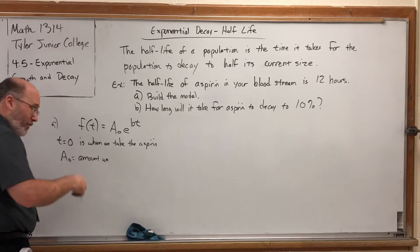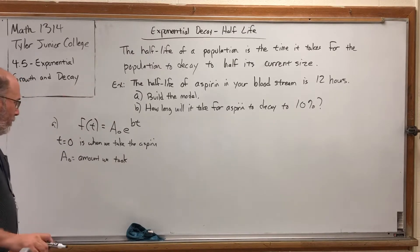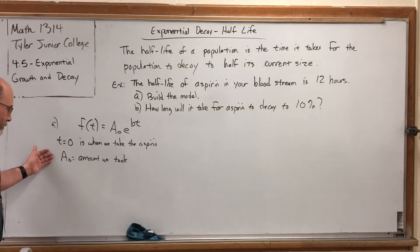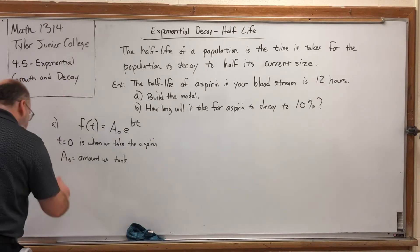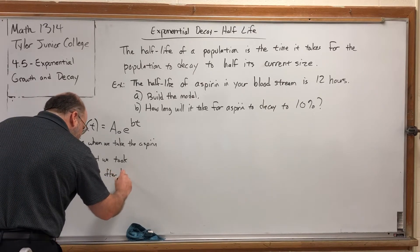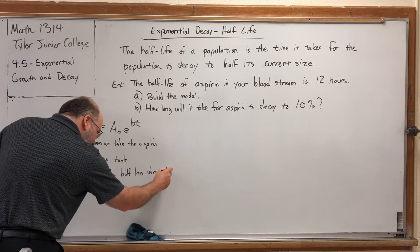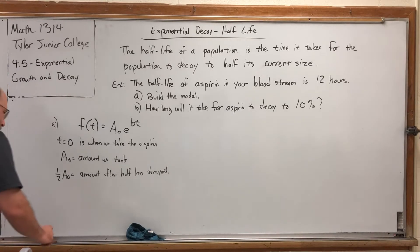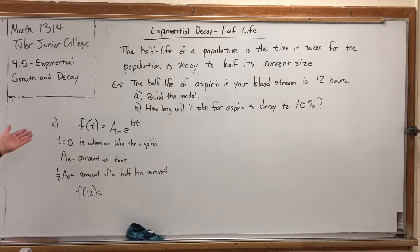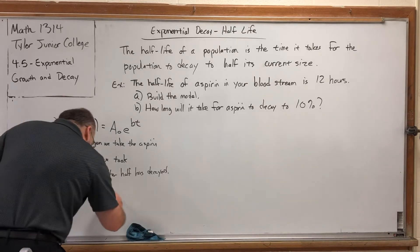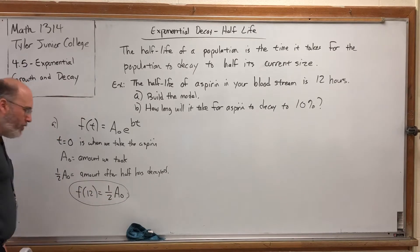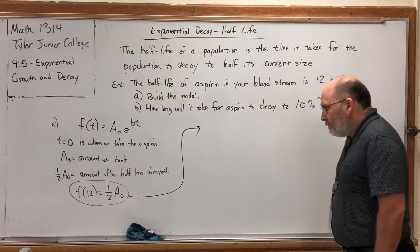What would A₀ represent? Well, that would be the amount we took. How much aspirin is in your body? Well, I literally just swallowed it. But how are we going to say that half of it has decayed when I don't even know how much of it we took? Well, it doesn't matter how much we took. It just matters that there's half of it left. One half A₀ is the amount after half has decayed, which would have been in 12 hours. So in other words, if we put 12 into our function, because that's how many hours it would take to elapse to get half of the aspirin decayed, the amount should be half of what we started with. Can we take advantage of this? Absolutely. But we don't know what A₀ is. You'll see why it doesn't matter.